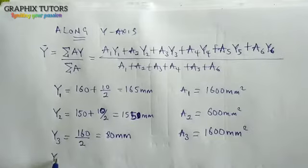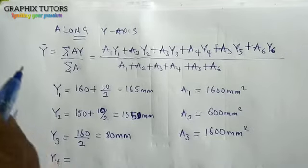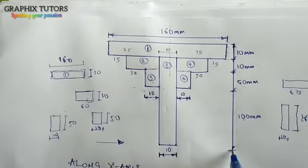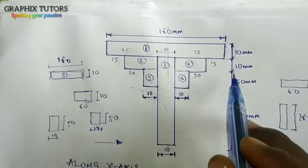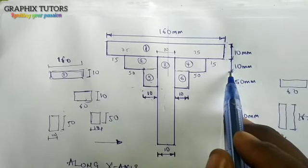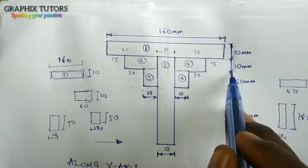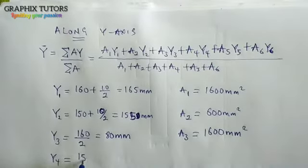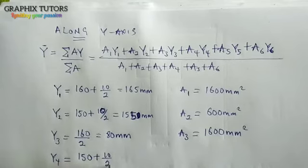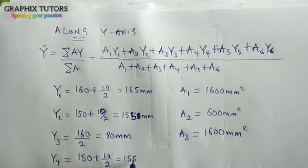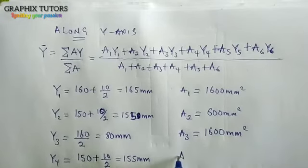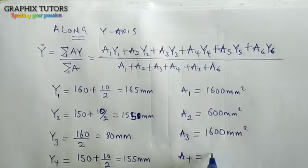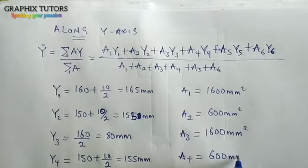For y4: I travel 100 + 50 = 150, and the height of y4 is 10, so y4 = 150 + 10/2 = 155 mm. The area A4 still remains 600 mm².